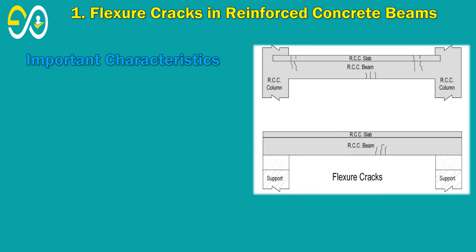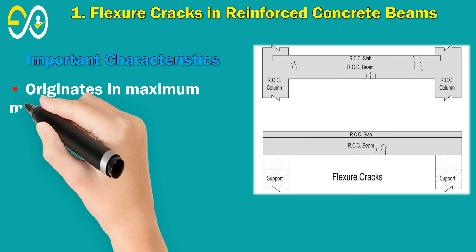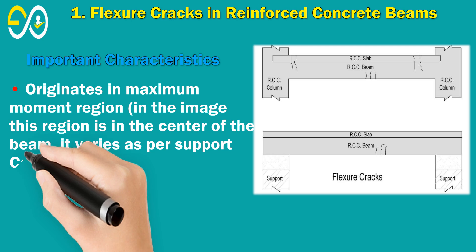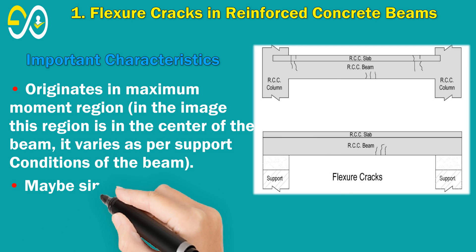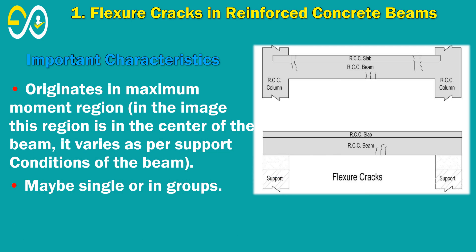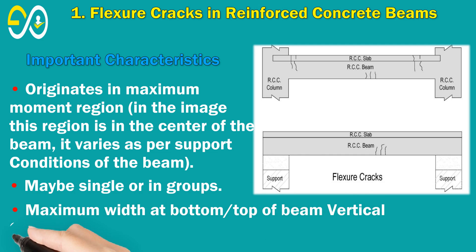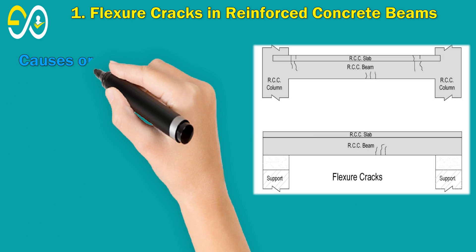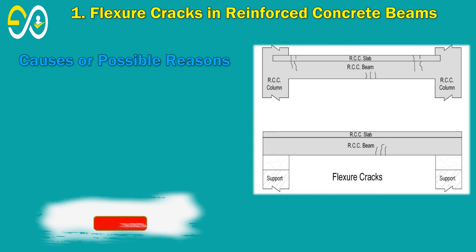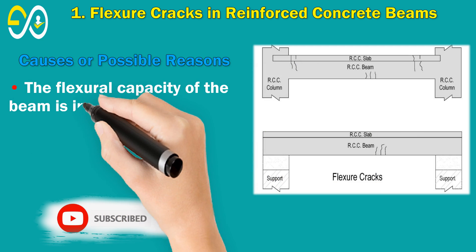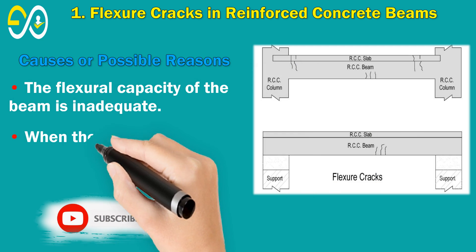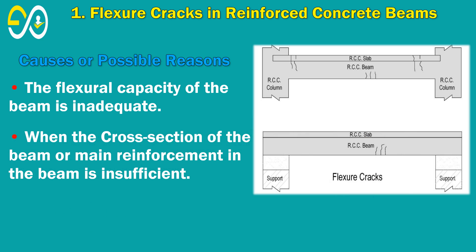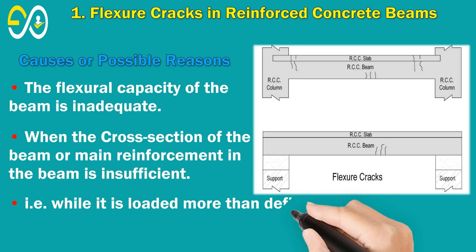Important Characteristics: Originates in the maximum moment region; in the image this region is in the center of the beam, though it varies as per support conditions. May be single or in groups. Maximum width at the bottom or top of the beam — vertical cracks in the beam. Causes: The flexural capacity of the beam is inadequate, when the cross-section of the beam or main reinforcement is insufficient, for example while loaded more than the defined loads.